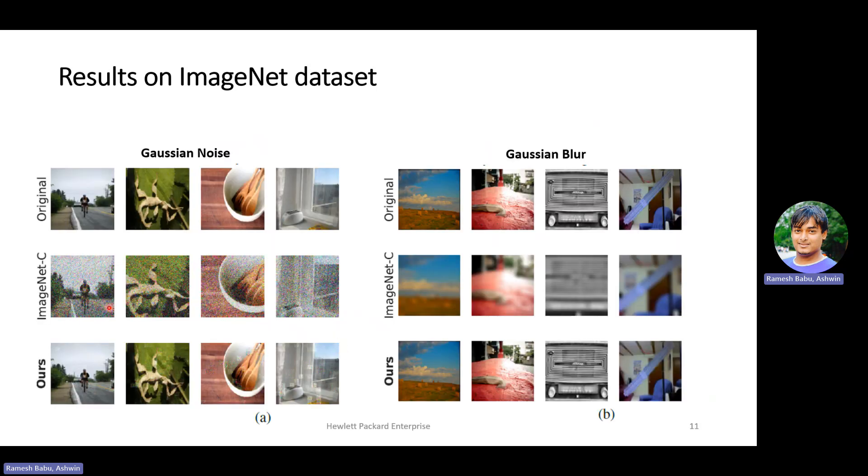So this can be visually observed in this slide, where you can compare the amount of noise that is being added by the competitor and our approach. You'll hardly be able to see some of the noises that is being added by our approach, whereas the popular competitor adds uniform noise across the image.